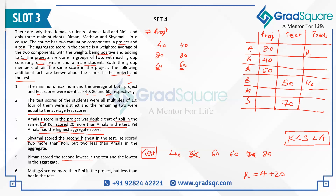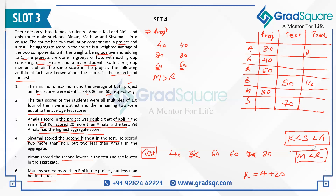The last statement: Matthew scored more than Rini in project. Rini already has a project score of 60. The available project scores are 40, 60, and 80, so Matthew must be scoring 80 on the project. However, Matthew scored less than Rini in the test.